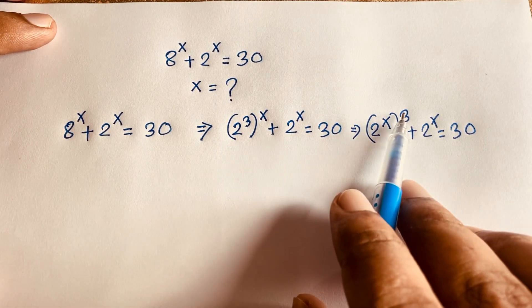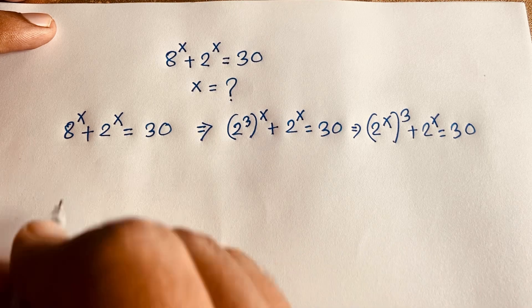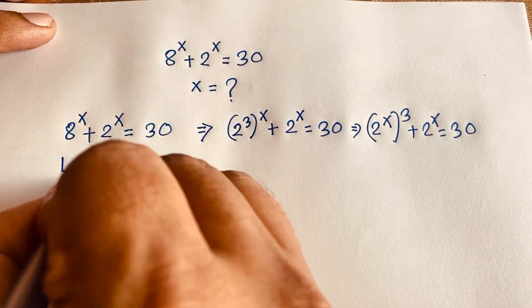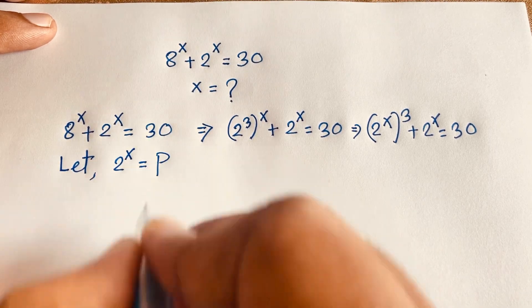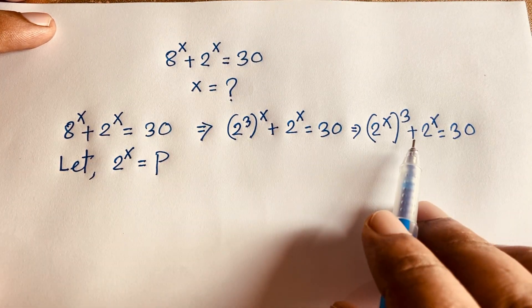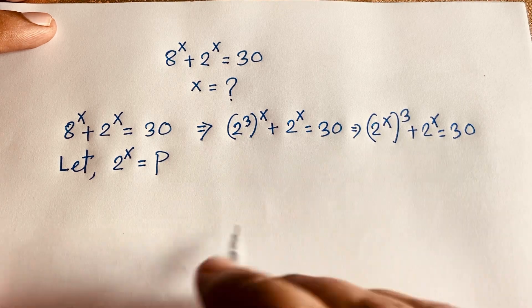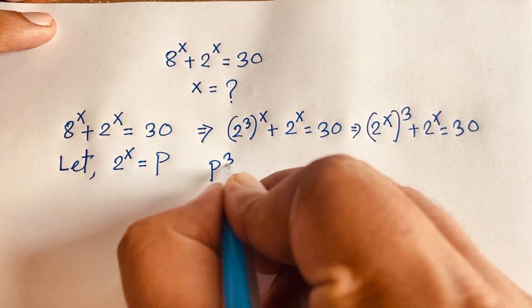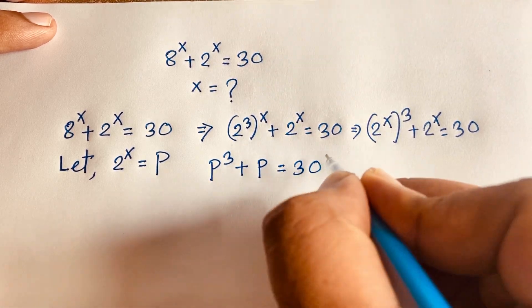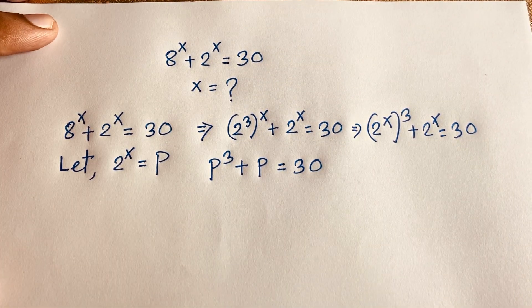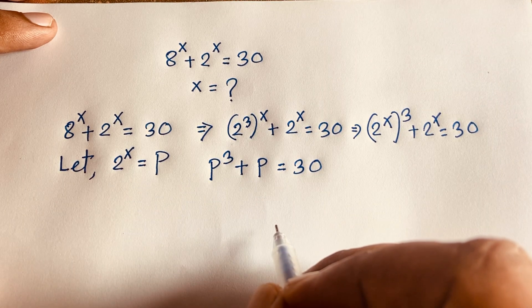We find that both terms have 2 to the power x — they are the same. So if I let 2 to the power x equal to p, I can say easily this becomes a cubic equation: p to the power 3 plus p is equal to 30. So we have a cubic equation: p³ + p = 30.